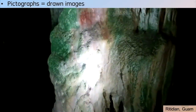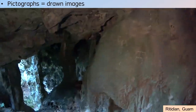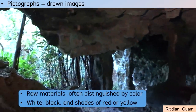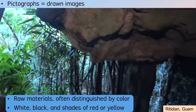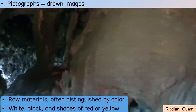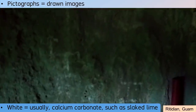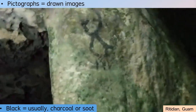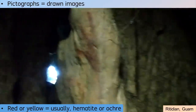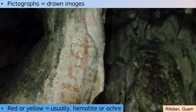Many of the issues for describing petroglyphs could apply for pictographs. As drawn images, however, pictographs naturally involve a number of unique characteristics. First, the raw material of a pictograph can be described, with the most obvious characteristic being the color. Most of the world's pictographs are found in varieties of white, black, and shades of red or yellow. White color usually indicates calcium carbonate, such as from slaked lime. Black color usually signifies charcoal or soot. Red or yellow coloring tends to be due to the use of hematite or ochre, sometimes as one ingredient in a more complex recipe.